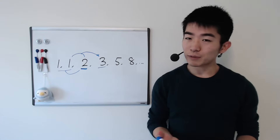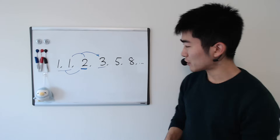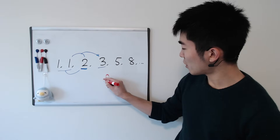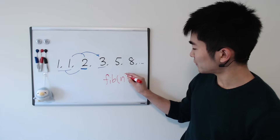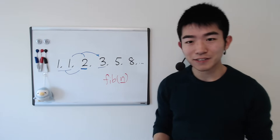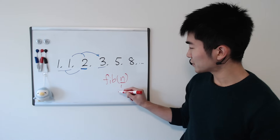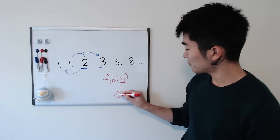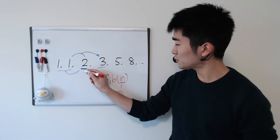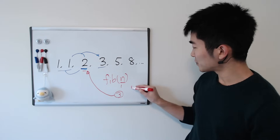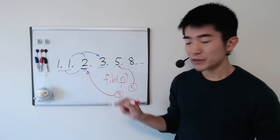So let's say we're trying to solve the problem of finding the nth Fibonacci number, or writing a function called fib(n) which takes a positive integer n and finds and returns the nth Fibonacci number. If the given n is 3, we want to find and return the third Fibonacci number which is 2. If the given n is 5, we want to return the fifth Fibonacci number which is 5.